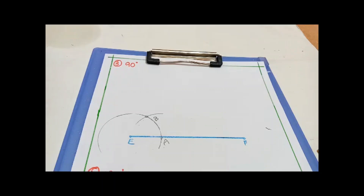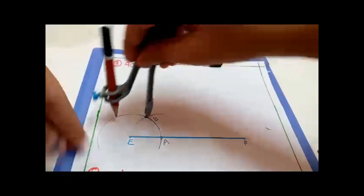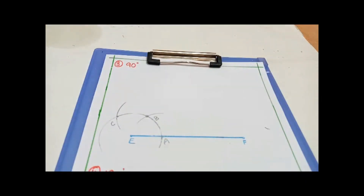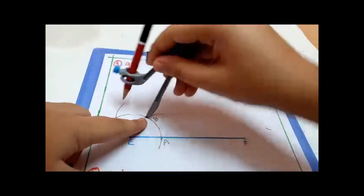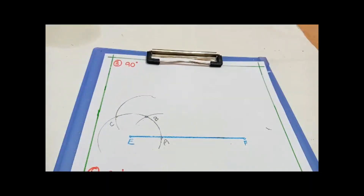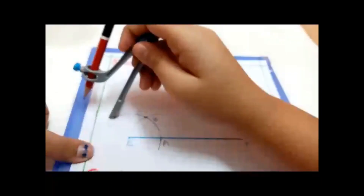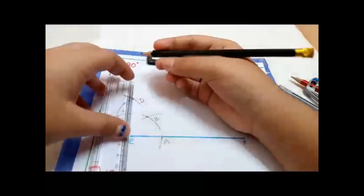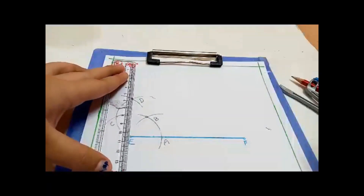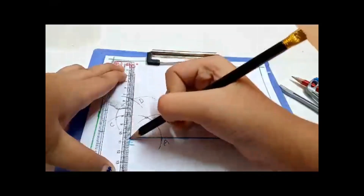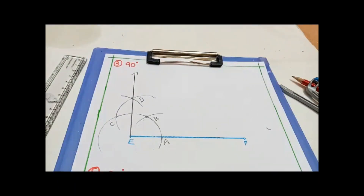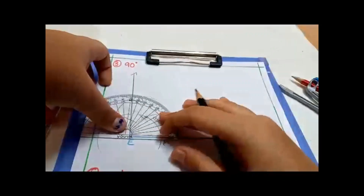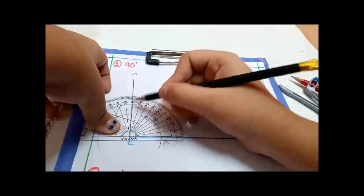Since 90 is between 60 and 120, we also draw 120 degrees. Then, with the same radius, put the compass point at B and draw an arc, then put the compass point at C and draw an arc. These two arcs intersect — mark the intersection as D. Joining D and E gives 90 degrees.